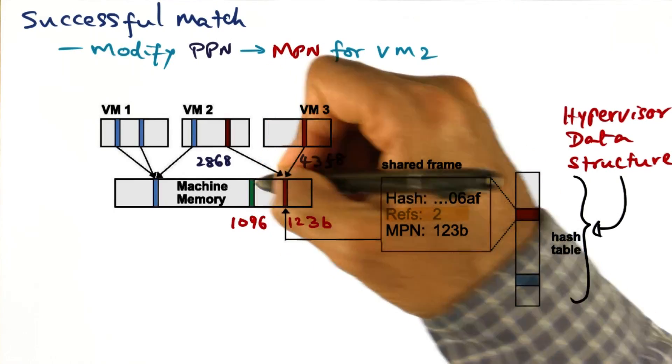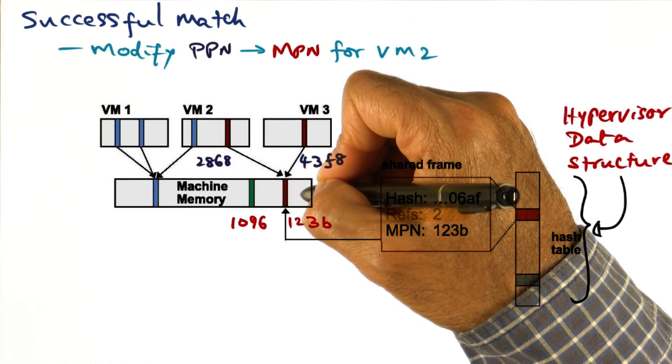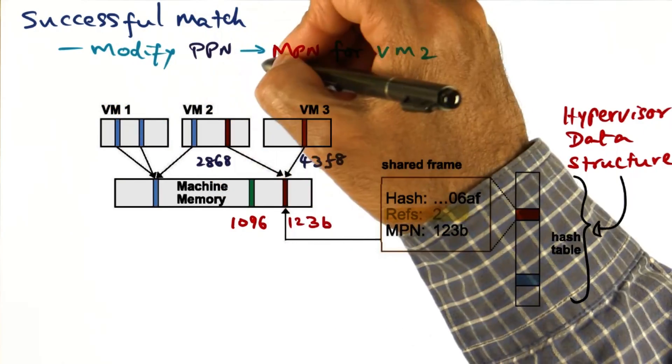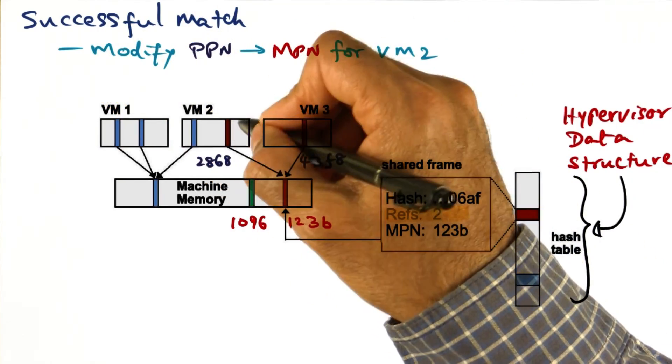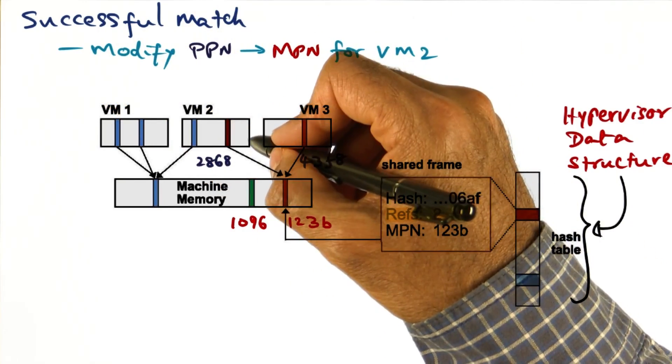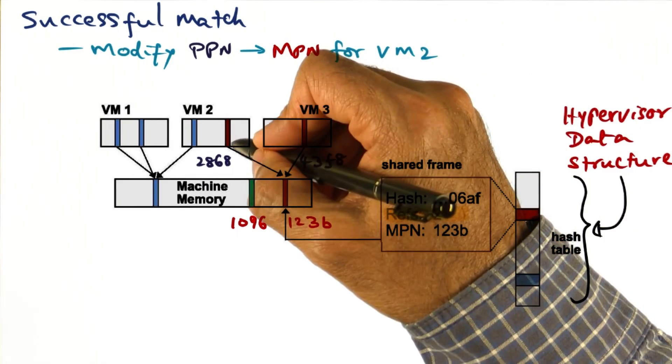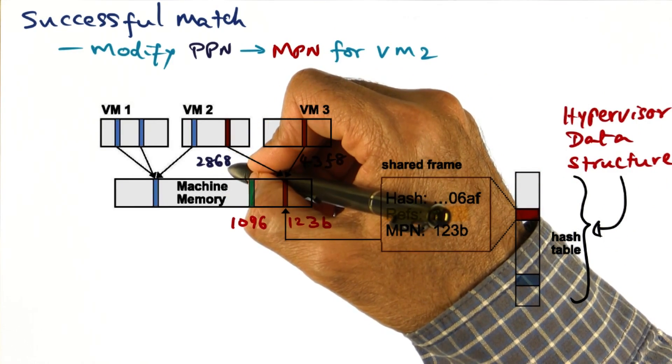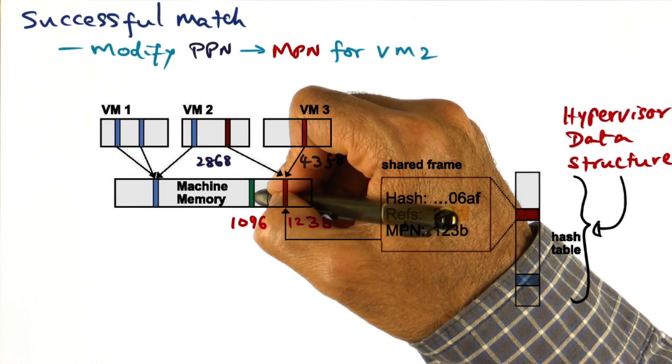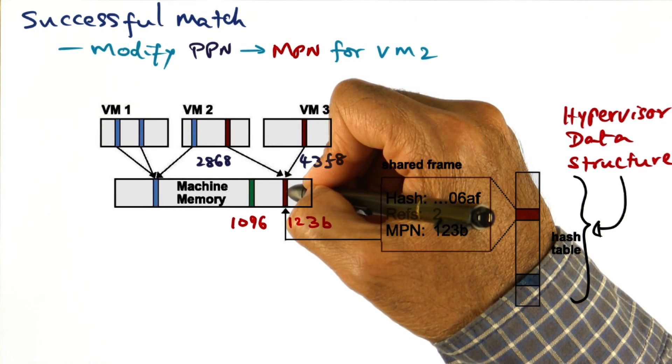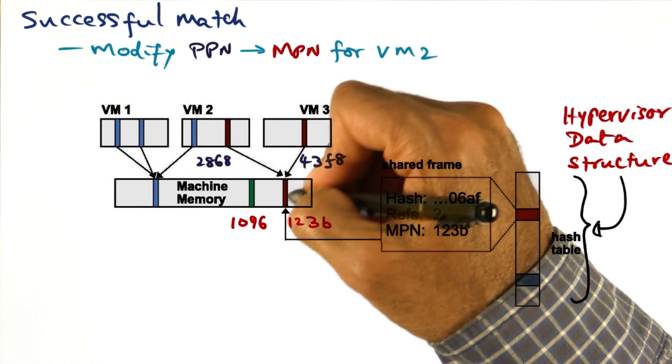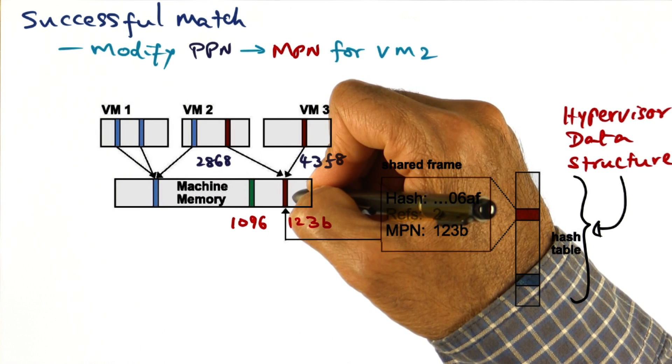If the content hash of 1096 and 123B are exactly the same, then we can modify the PPN to MPN mapping in VM2 for the page 2868, which used to point to 1096. We can now make it point to 123B, because they both are exactly the same content.